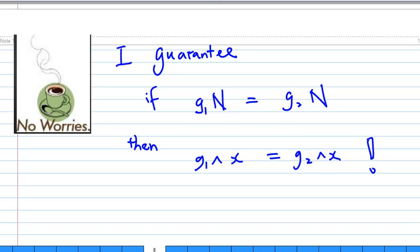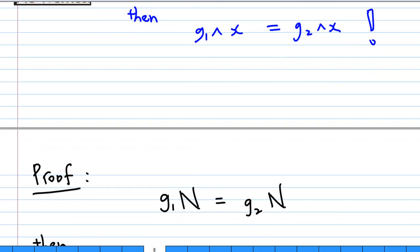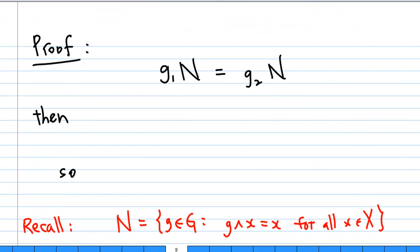No worries. I guarantee if g1N equals g2N, then g1^x must equal g2^x. So, here is the proof. Suppose g1N equals g2N. If you multiply both sides by g2 inverse on the left, we get g2^{-1}g1N equals g2^{-1}g2 is E, so E times N is N. Therefore, we conclude g2^{-1}g1 belongs to N.